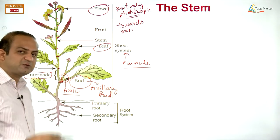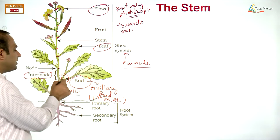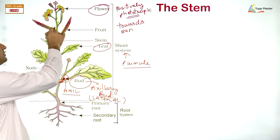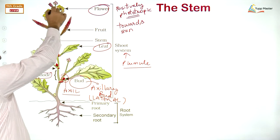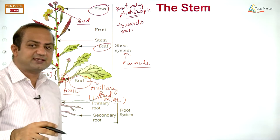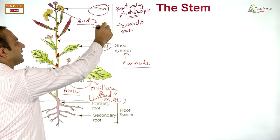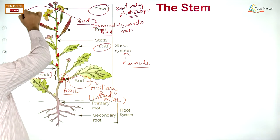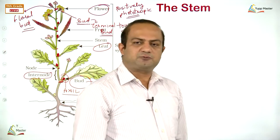The axillary bud is at the side of the stem and can also be called a lateral bud. The structure at the tip of the stem is called the terminal bud. The terminal bud here is bearing a flower, so it is also called a floral bud. Buds that bear vegetative structures like leaves, branches, and thorns are called vegetative buds.